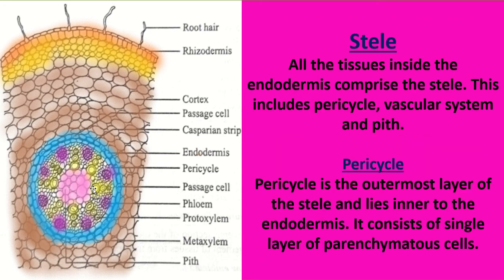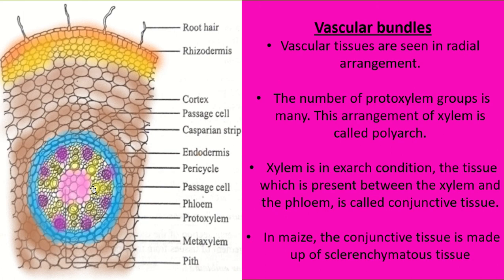All tissue inside the endodermis is represented as stele, which contains pericycle, vascular system, and pith. Pericycle is the outermost layer of stele that lies inner to the endodermis, made up of a single layer of parenchyma cells. The vascular bundle is radially arranged. The number of protoxylem strands is many, so this arrangement is said to be polyarch — numerous xylem and phloem in alternate arrangement.